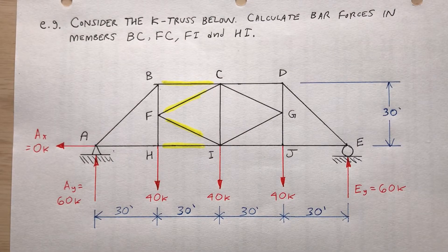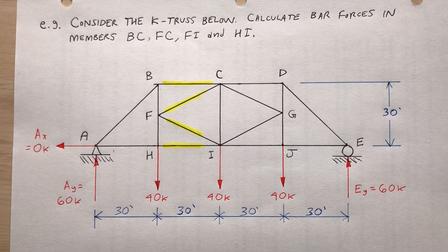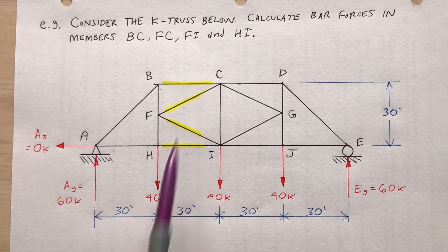Okay, consider the K truss below. Calculate bar forces in members BC, FC, FI, and HI, which I've highlighted here in yellow.